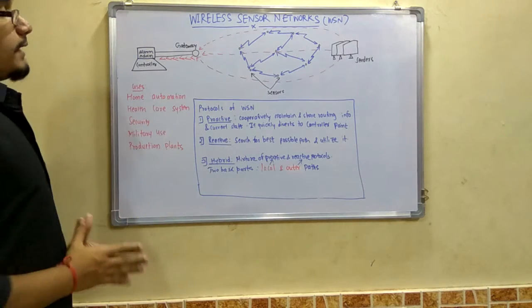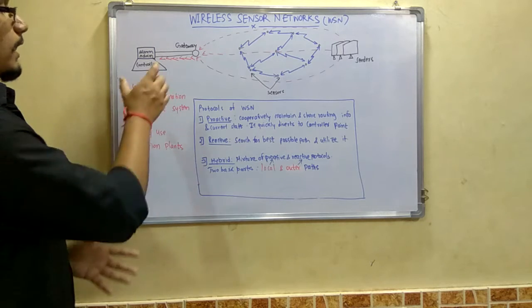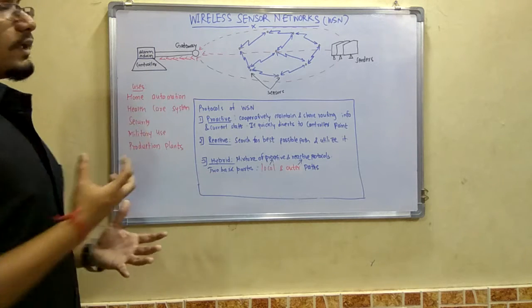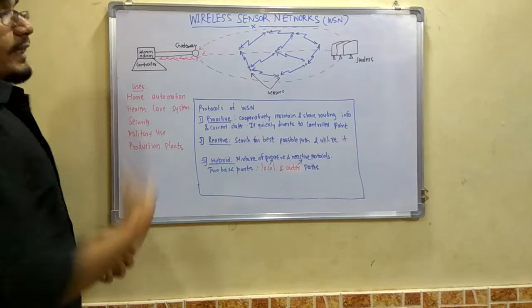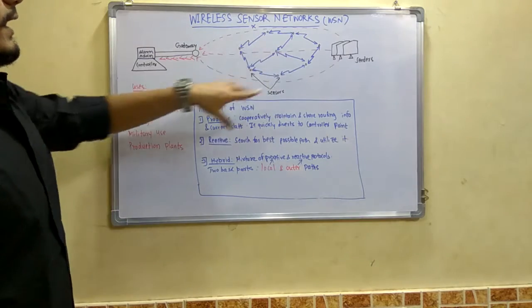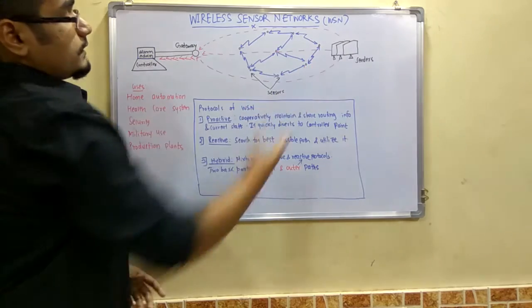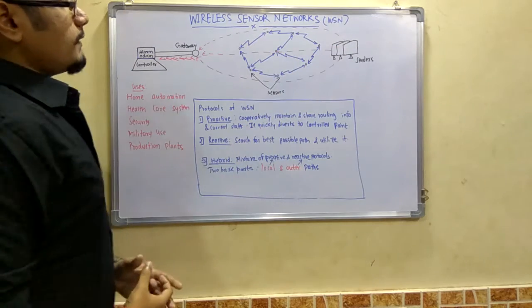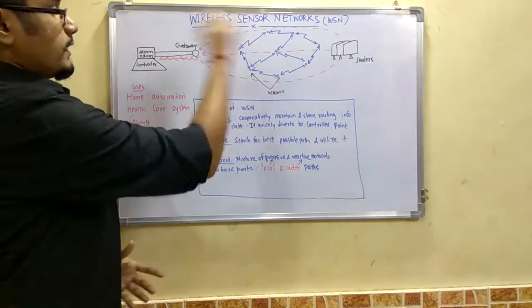This wireless sensor network is made by means of an alarm controller which controls the gateway that receives all the signals from the sensors, shown here in red color.